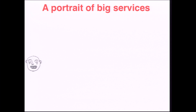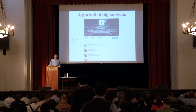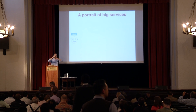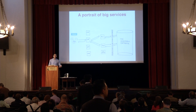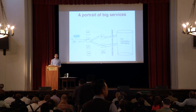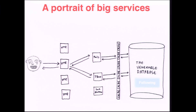If we look at big services today, say the Twitters of the world, when users perform actions — say our user here follows Justin Bieber — this follow action has to go somewhere. When we look at the collection of services that makes up a website like twitter.com, this follow action essentially flows through many of them, but it ends up in a database system.